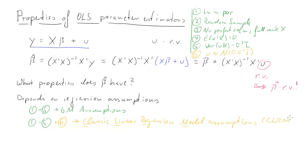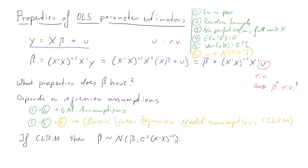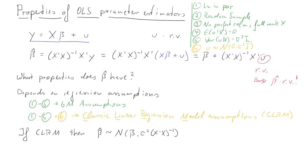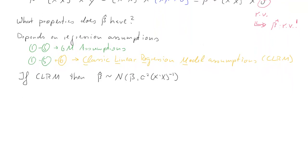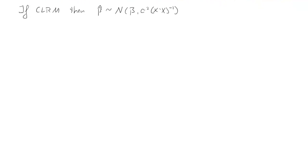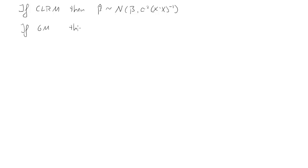Depending on which set of assumptions is valid, we can draw certain conclusions. If the CLRM assumptions hold, we can establish that beta hat is normally distributed, unbiased with expected value beta, and has variance sigma squared times x prime x inverse. If only the Gauss-Markov assumptions are valid, we have a more restricted result: the OLS parameter estimators are what we call BLUE — best linear unbiased estimators.